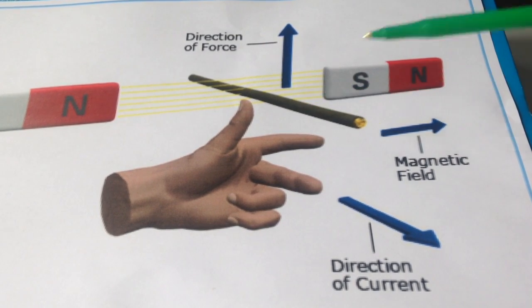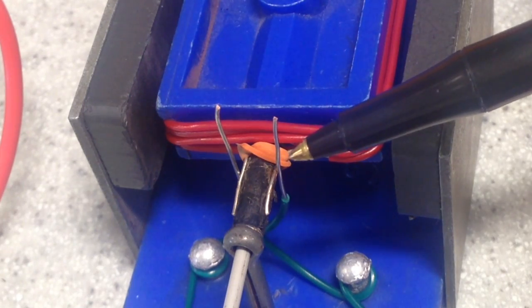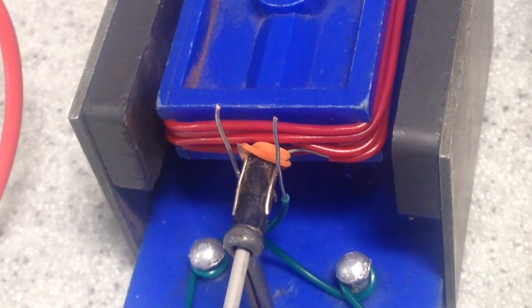Let's have another look at the motors you made the other day. You'll remember you had the red wire wrapped around the blue rectangle with the two ends sticking out on the same side. These are called the split ring commutator. You'll see why in a minute.